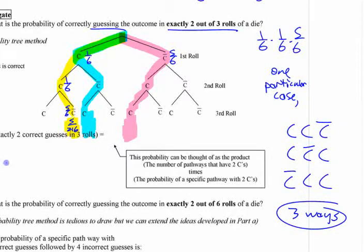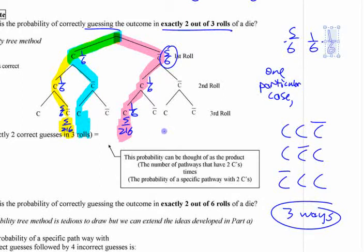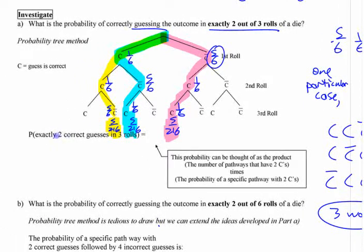Do you have to calculate each case individually? Well, five-sixths times one-sixth times one-sixth — what does that give? The same number. If all of these rolls are independent, all we're doing is rearranging those fractions. We're not changing the outcome for each one — each pathway is going to give five out of 216. So you have three different arrangements that all produce the same result. The total chance of getting exactly two correct is not five out of 216, so what is it?